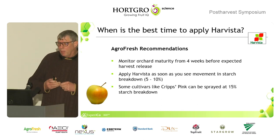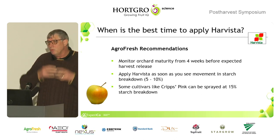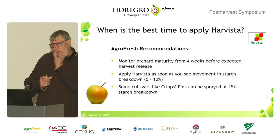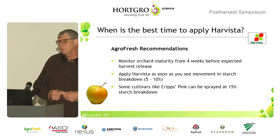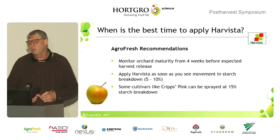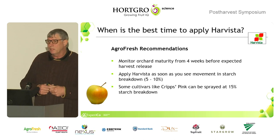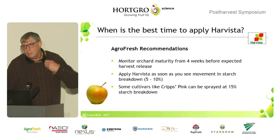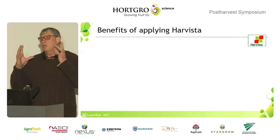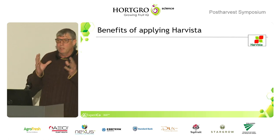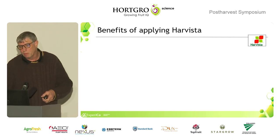The recommendation at this stage is to apply Harvester early, before the train runs away. Start tracking your fruit at least four weeks before your expected harvest release. When starch index reaches between 5 and 10%, that's a good time to apply. Some cultivars like Pink Lady could be taken a bit further. However, if you've got a crisis — fruit already starting to drop — you can apply Harvester and it starts putting on the brakes.